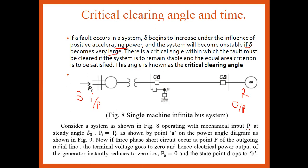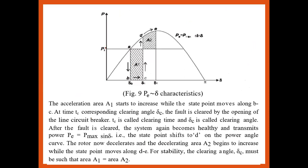Let us discuss in detail. Consider the system as shown in the figure, where Pi is the input steady-state power at the initial angle delta-zero. Starting from the steady state, accelerating power goes from point A to B at delta-zero. At a particular point, the fault occurs, so delta rises under de-accelerating from B to C, then C to D, then D to E. This is the de-accelerating region and this is the accelerating region. Delta-c is the critical clearing angle, and delta-one is the maximum angle on the A2 power curve.